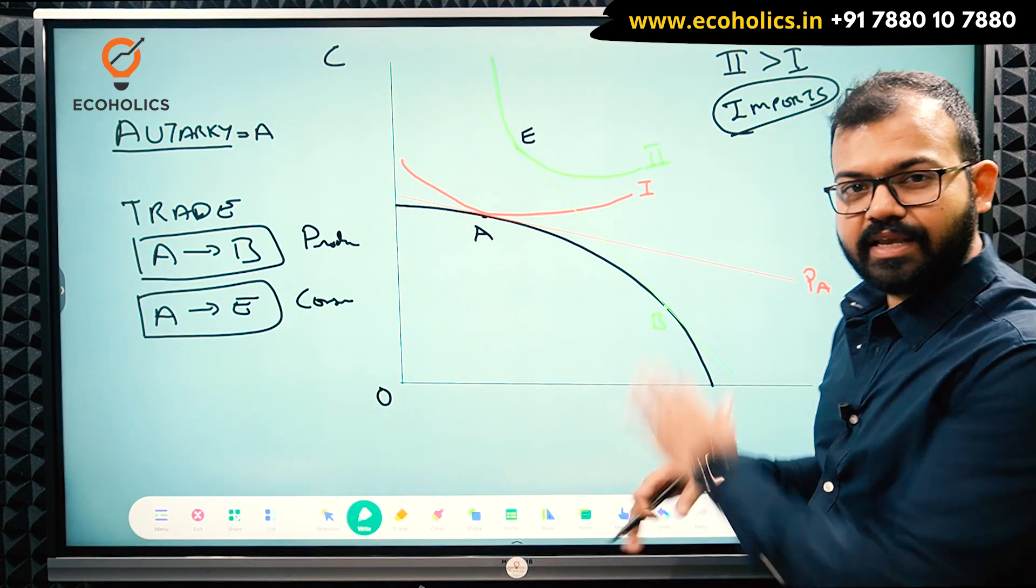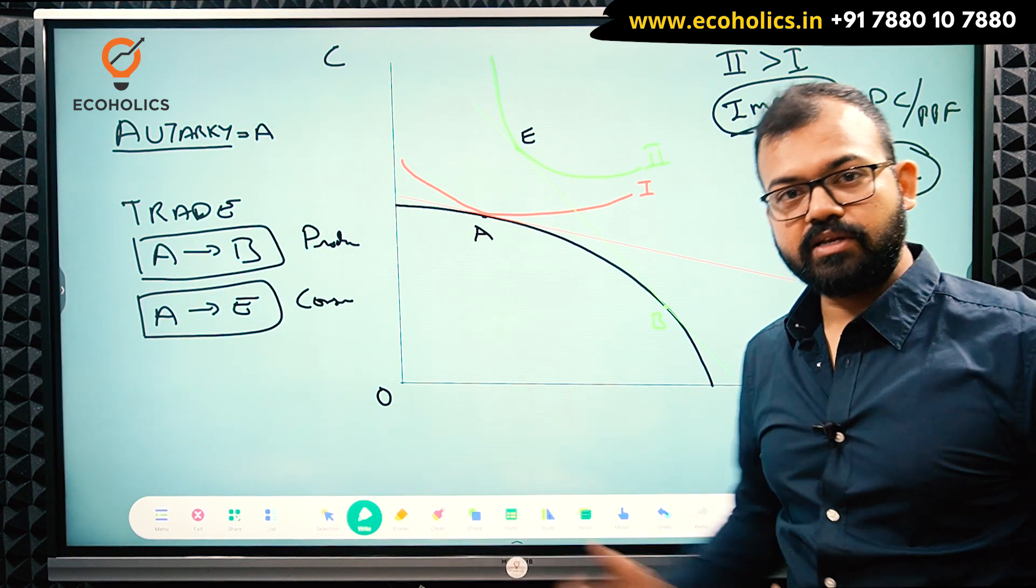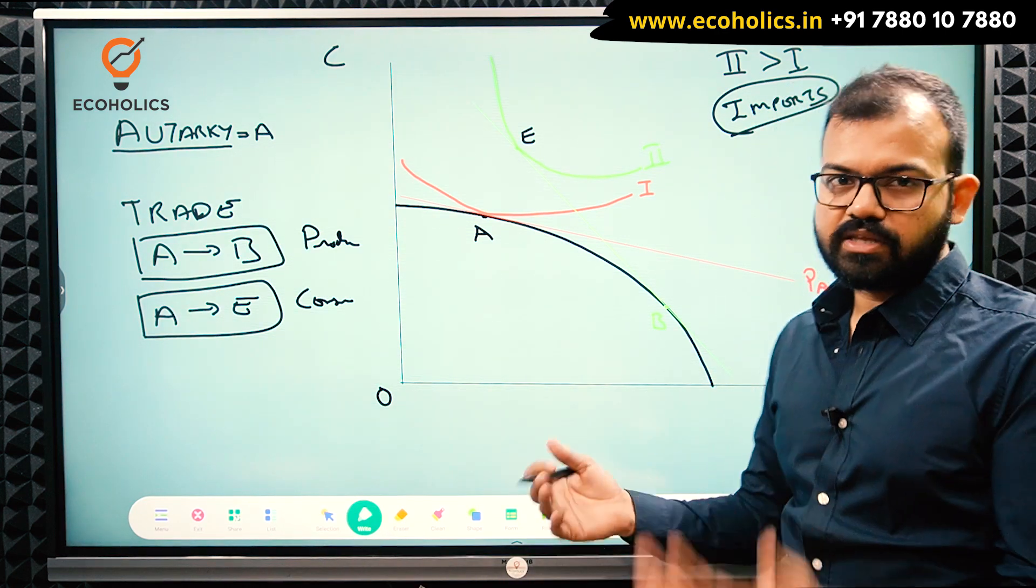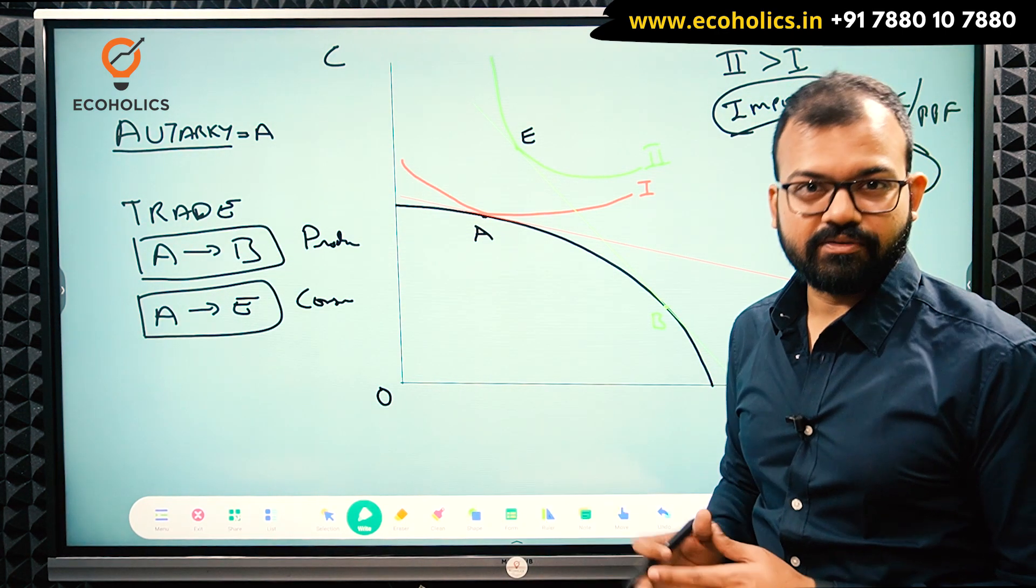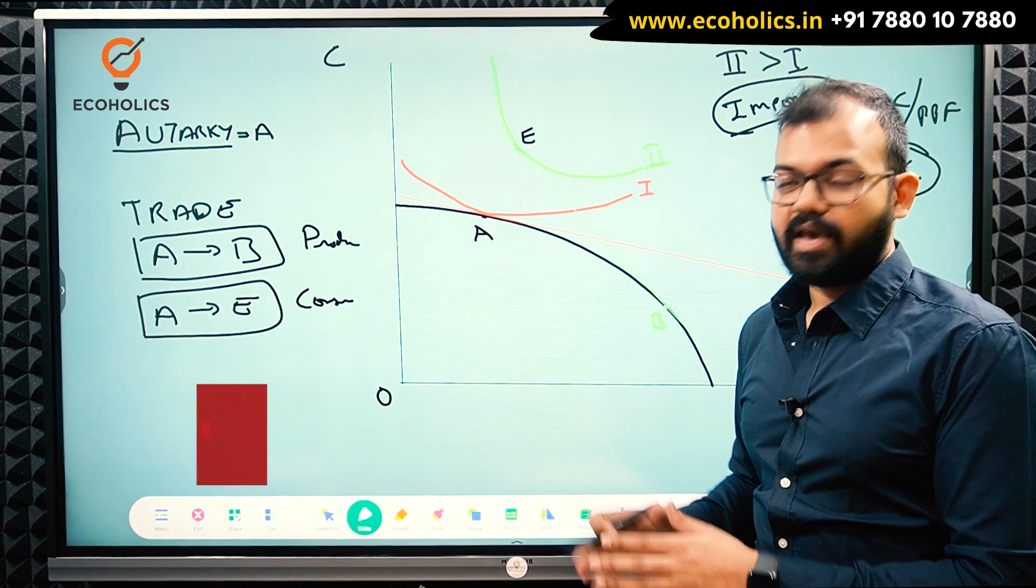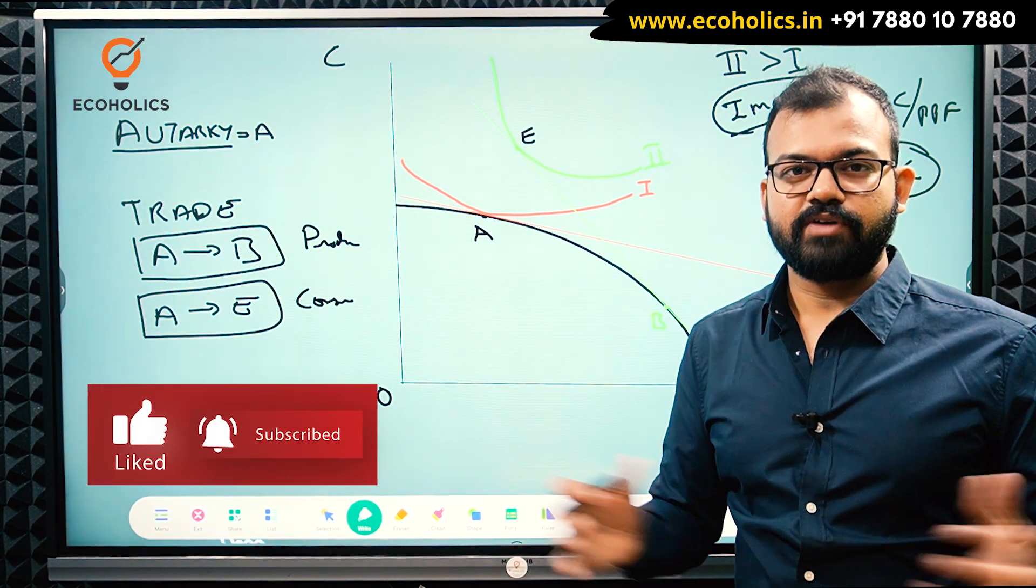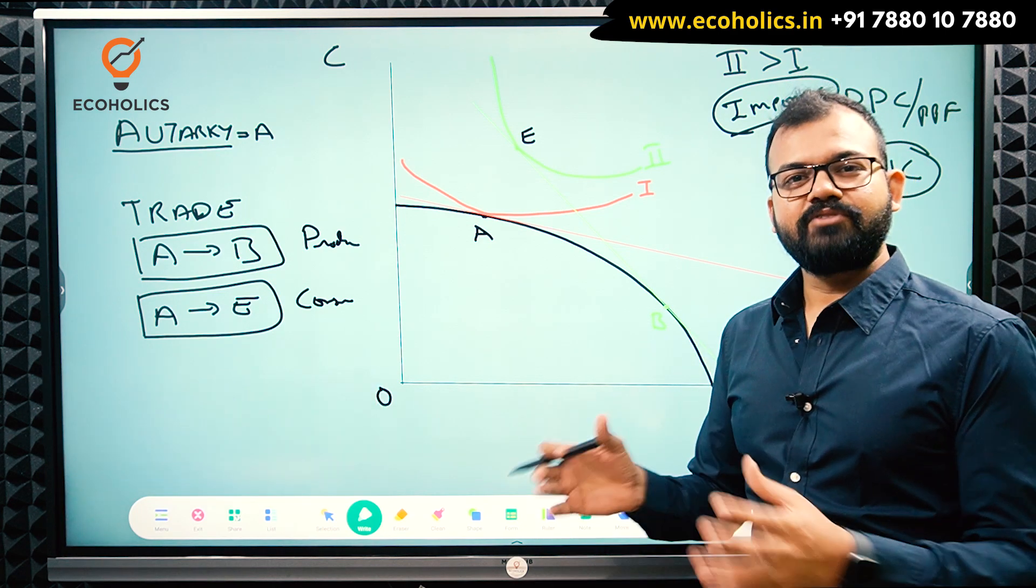So I hope you understand this diagram. If you still have any doubt, anything in mind, you can mention in the comment section or the numbers given in the description. Apart from this, the second video from the US perspective where US is trying to have expertise in clothes, we'll see in the next video. Make sure you subscribe to Ecolex so you get the notification of the next video. If you like this video, give a big thumbs up and share with your friends.